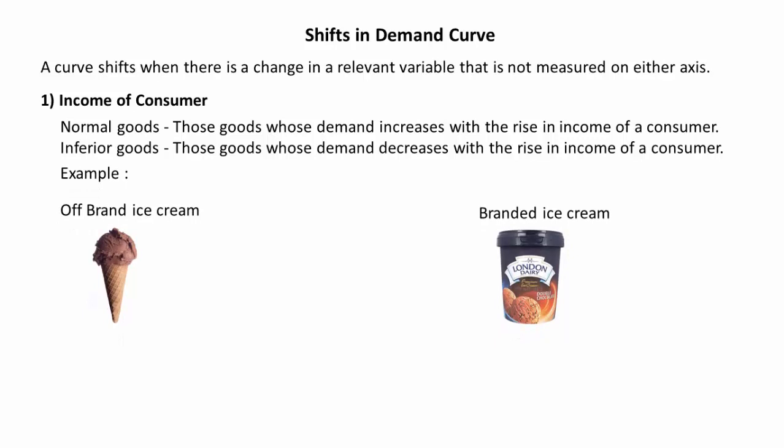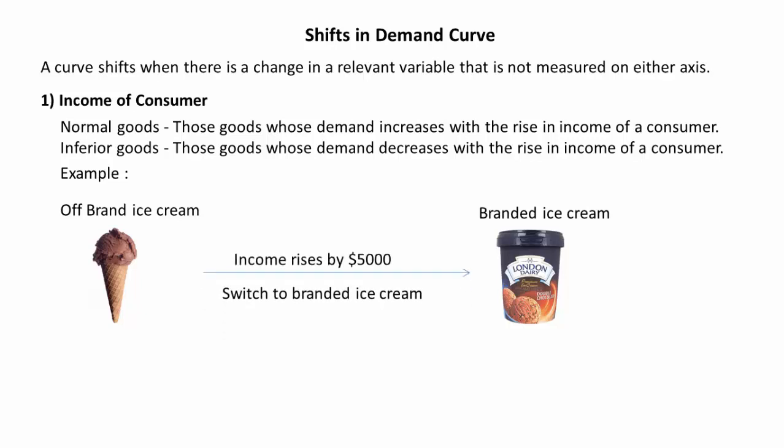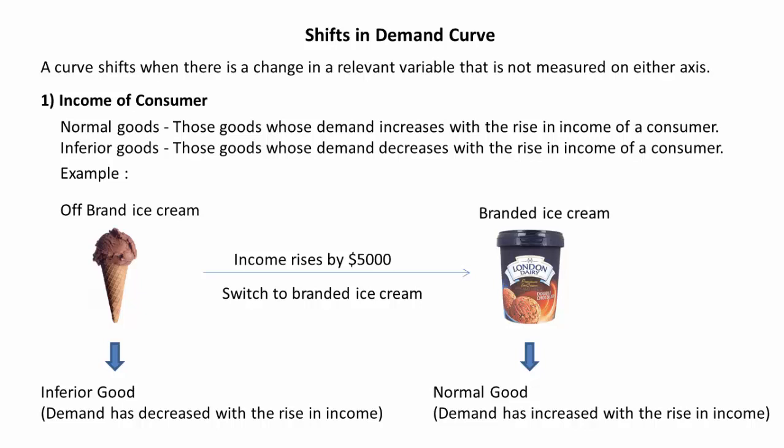Let us take an example to understand this in detail. Say there are two types of ice cream available in the market: off-brand ice cream and branded ice cream, and you are currently consuming off-brand ice cream. Now suppose your income rises by $5,000. It is likely that you will switch from off-brand ice cream to branded ice cream. So in this case, we may call off-brand ice cream an inferior good, as its demand has decreased with the rise in your income, and branded ice cream a normal good, as its demand has increased.